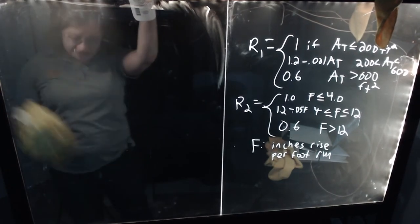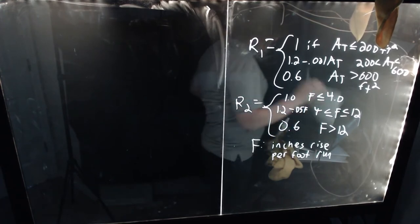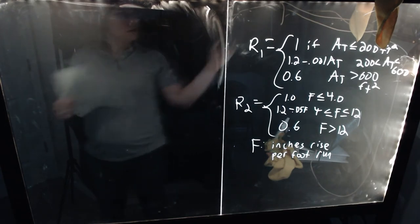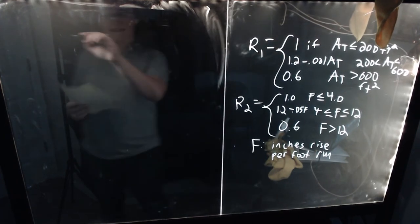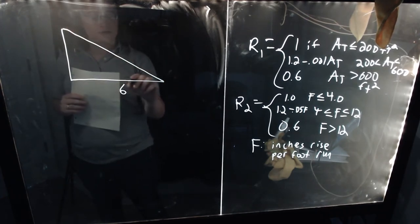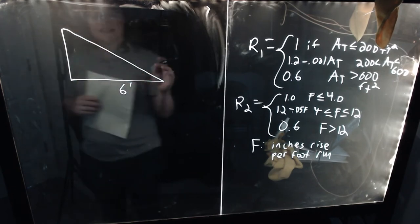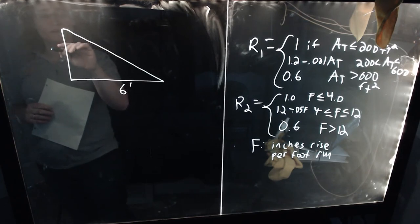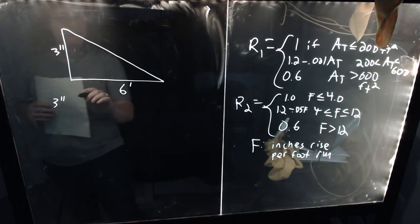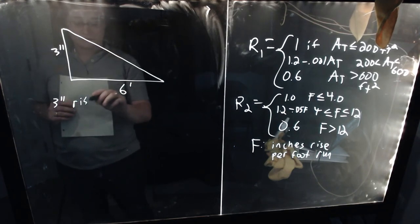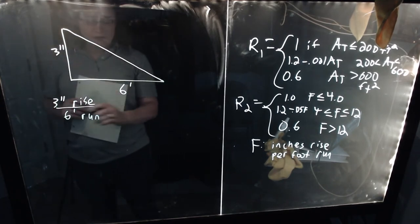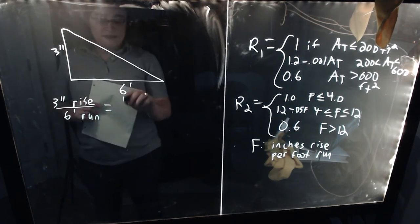So I just need to make a quick illustration to illustrate what F is. So F is your slope parameter in the R2 equation. And if you want to calculate this or want to determine this, let's say you had a roof with a run of six feet, and let's say it went upward vertically three inches, okay?